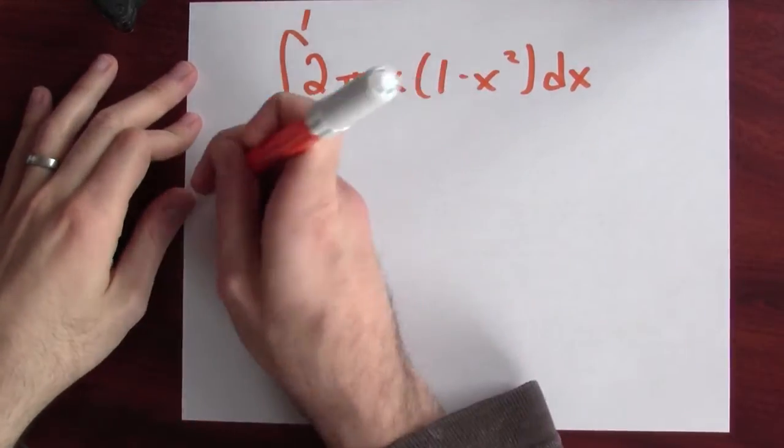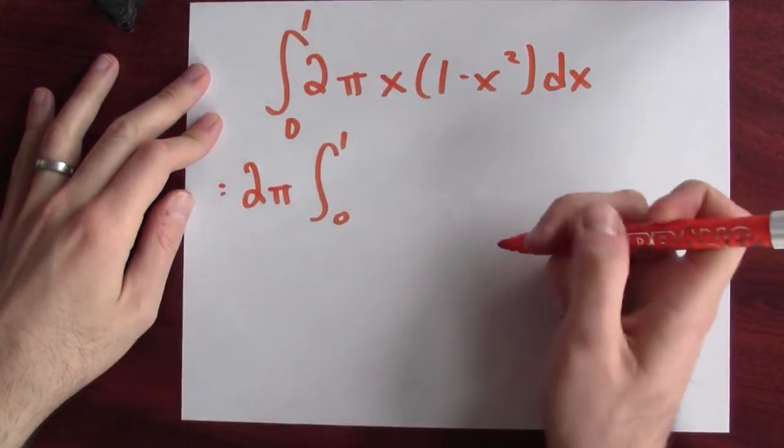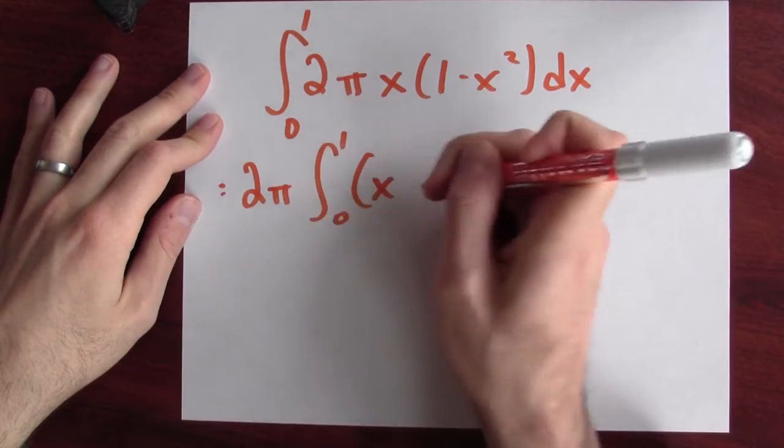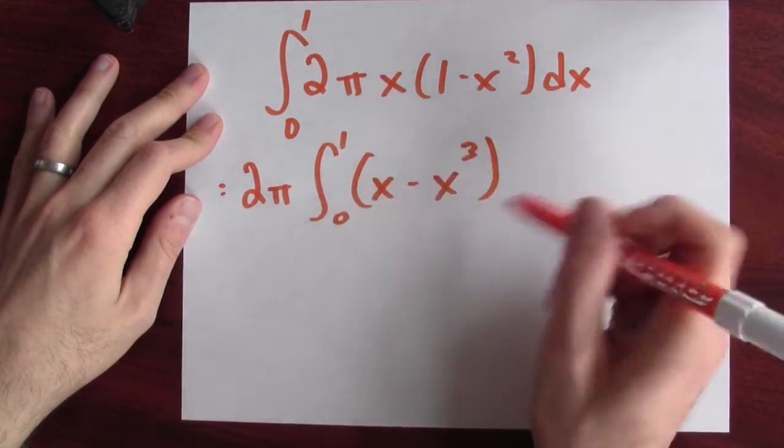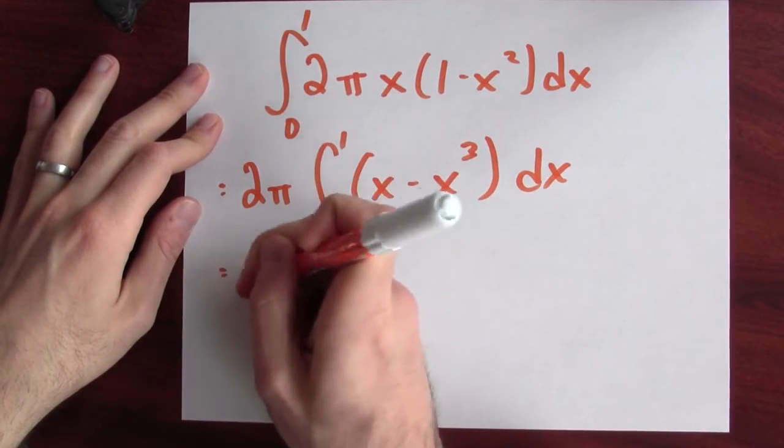Finally, it's just a matter of evaluating the integral with the fundamental theorem of calculus. And to do this integral, well, I'll pull out these constants, 2π, the integral from 0 to 1 of x minus x³, when I combine these two terms. Now I just have to write down an antiderivative here.